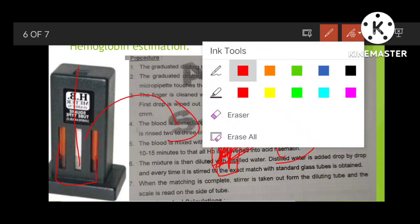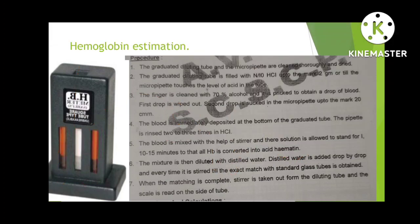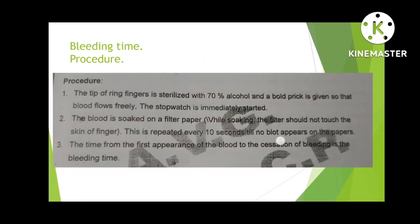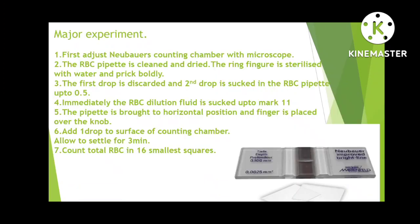Normal hemoglobin is 12 to 13 grams in the human body. These are minor experiments. Viva questions include: what is the normal hemoglobin count, what is the normal RBC count, what is the shape of RBC — biconcave shape. These are common questions asked in the viva.